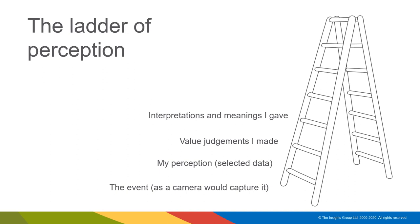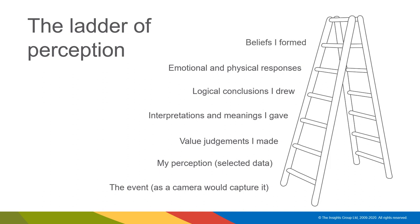From those judgments, we add interpretations and give meaning to what we believe happened around us — different based on all of our different perceptions. When we've done that, we draw a logical conclusion which makes sense to us. As a result, we have emotional and even physical responses, which leads us to form beliefs we then believe to be facts about the original event. But ultimately these beliefs may be different based on people's different perceptions, and from those beliefs we all take different actions.